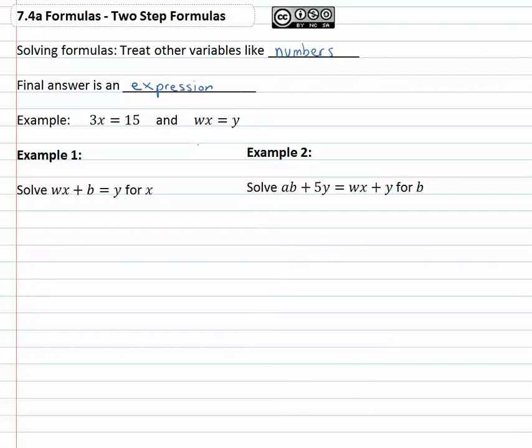So for example, if we have 3x equals fifteen, we've solved these equations before by dividing by three, and we get x is equal to five.